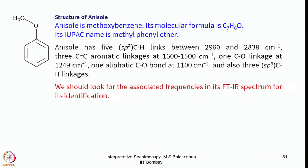Now let us look into the structure of anisole. Anisole is methoxybenzene with molecular formula C₇H₈O. It has 5 sp²-C–H links appearing between 2960 to 2838 cm⁻¹, 3 C=C aromatic linkages between 1600 to 1500 cm⁻¹, 1 C–O linkage at 1249 cm⁻¹, 1 aliphatic C–O bond at 1100 cm⁻¹, and 3 sp³-C–H linkages.